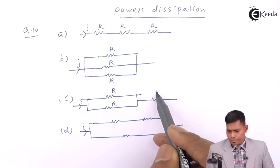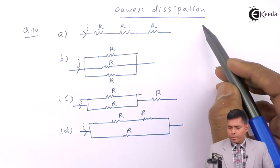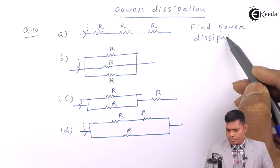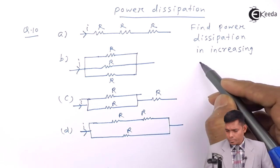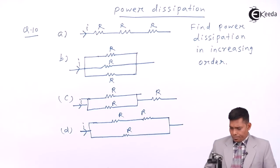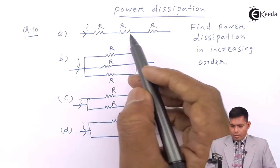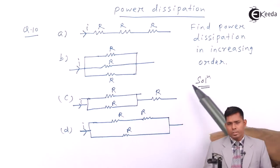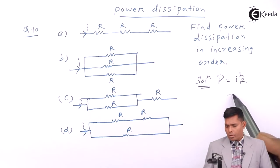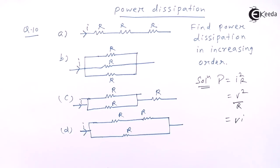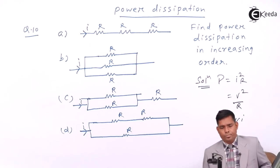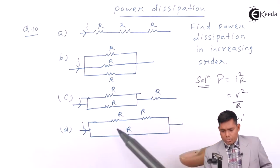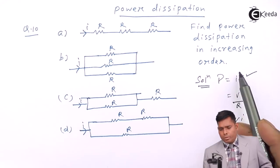All the resistances are equal and you have to find power dissipation in increasing order. To find the power, we have basically for resistors the power is i²R, or V²/R, or V×i. There are three formulas. Which formula are we going to use here? Because the current is the same, we use the formula P = i²R.